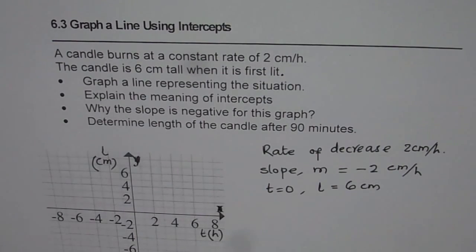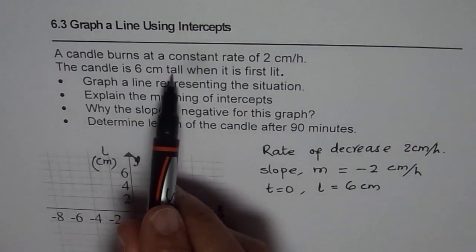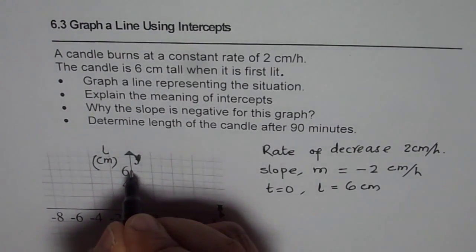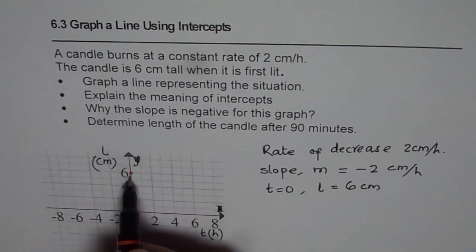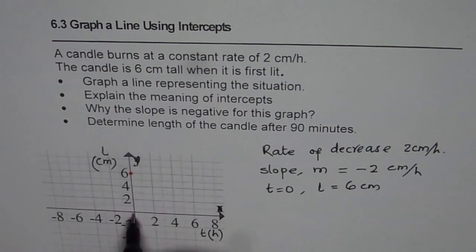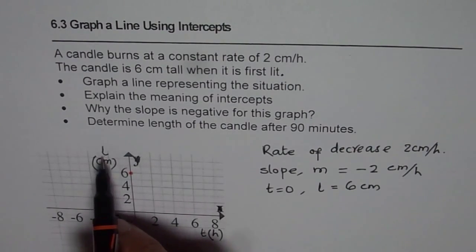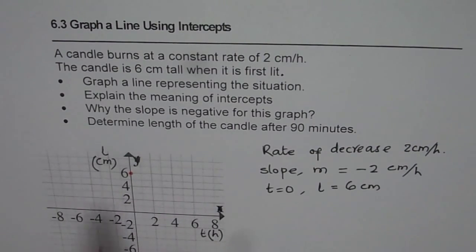Now, to begin with, the candle is 6 cm tall. So that means at t equals 0, length of the candle is 6 cm. So we get that point. This happens to be the y-intercept. So t is 0, length of the candle is 6 cm. We will call it l-intercept since l is the independent variable here.